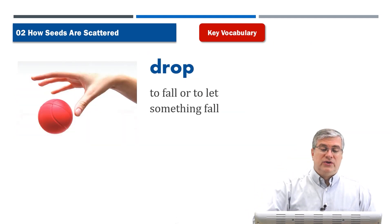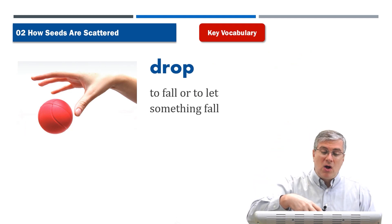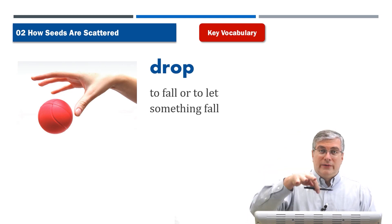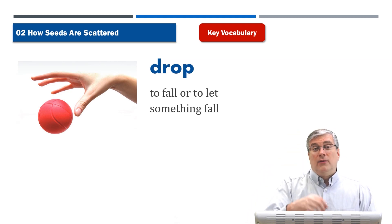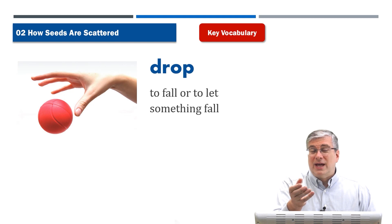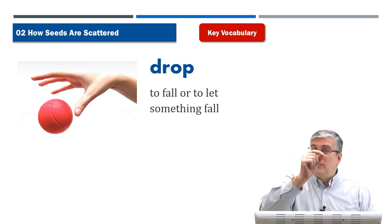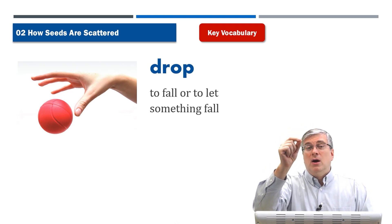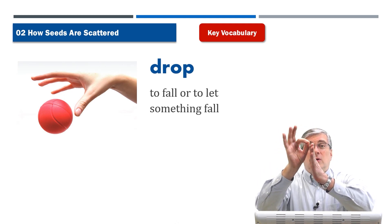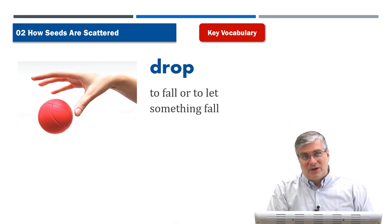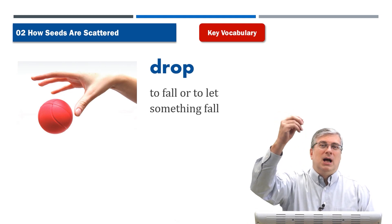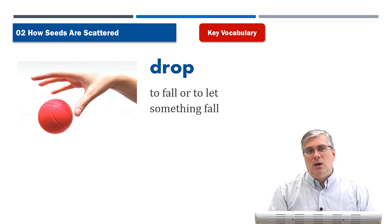Next word is drop. Drop just means to let something fall, or to fall by itself. If you just let go of something it will drop. With the dandelion seeds flying in the wind — what happens when the wind stops? The dandelion seed drops to the ground. It lands. So to drop means to fall from a high place down to a lower place.